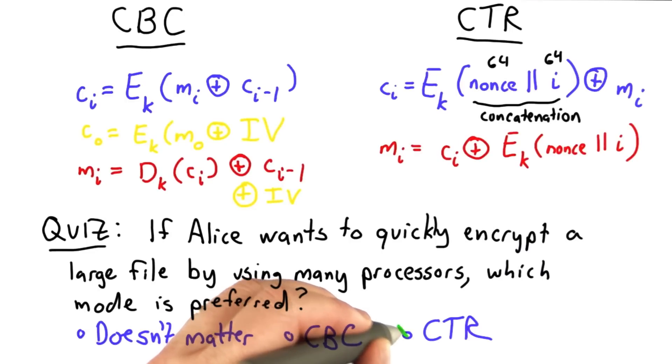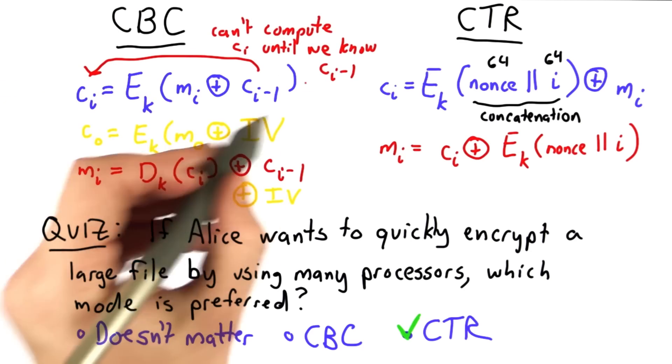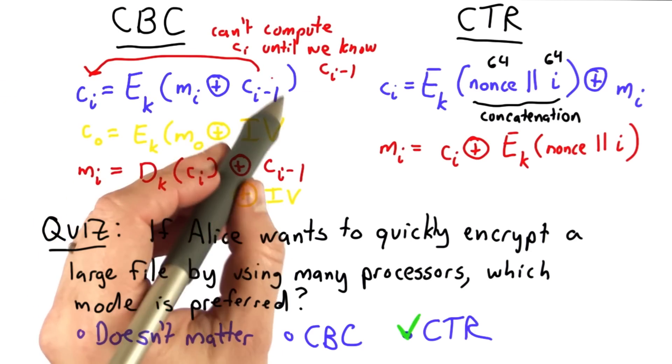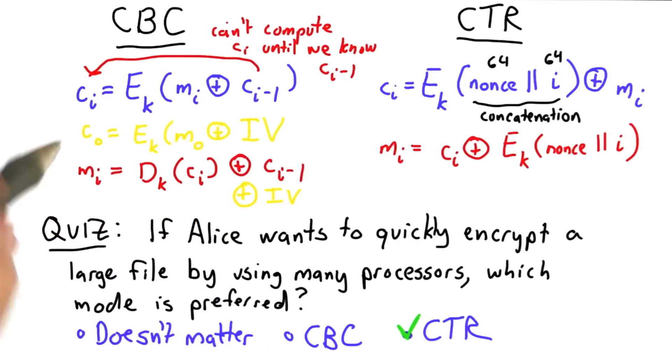The answer is that counter mode would be faster. The reason for this is with CBC mode, there's a data dependency. We can't start doing this encryption until we know the value of the previous ciphertext block, so we can't run all these encryptions in parallel. That's one major drawback of CBC mode.